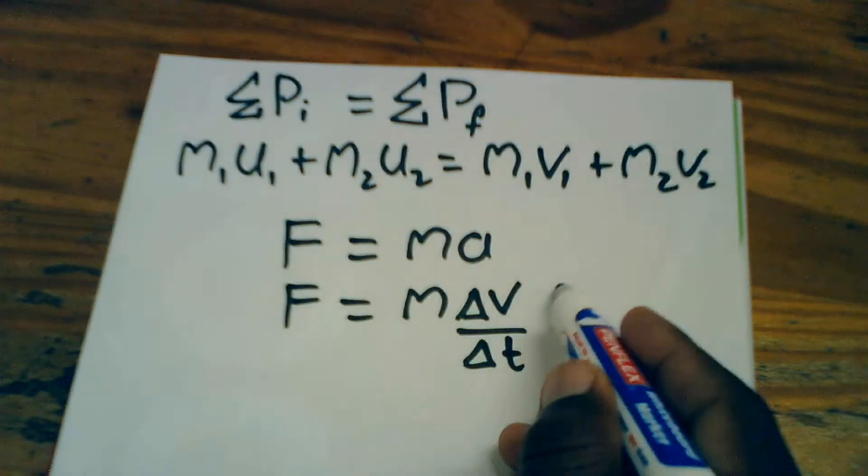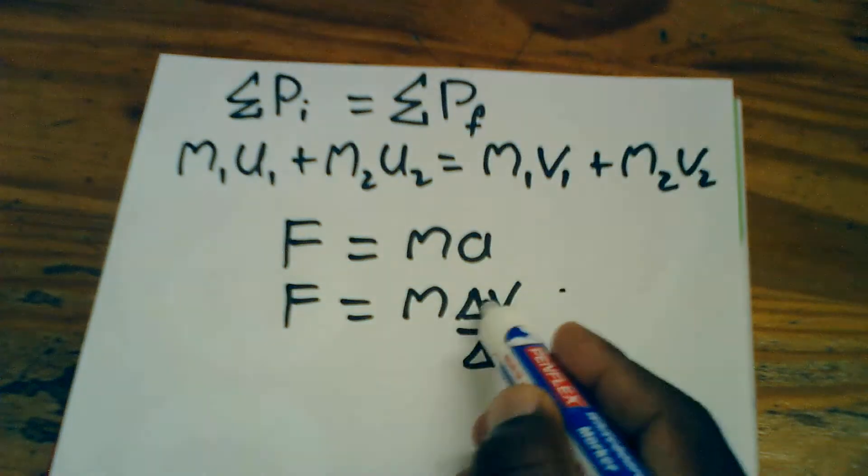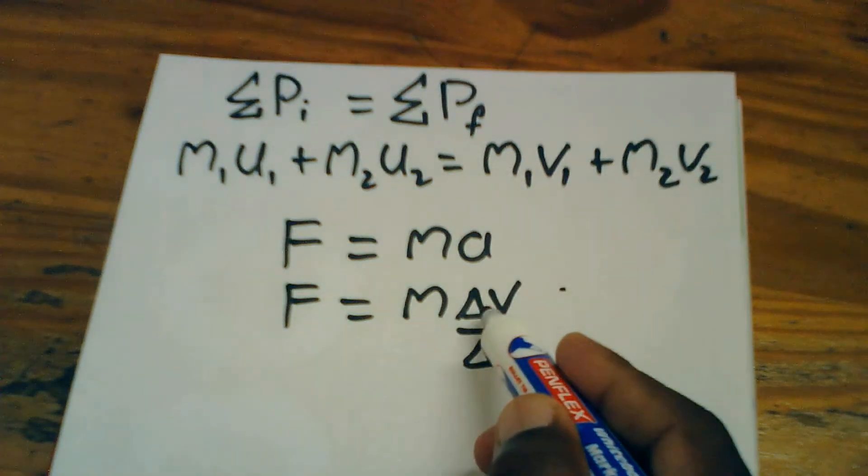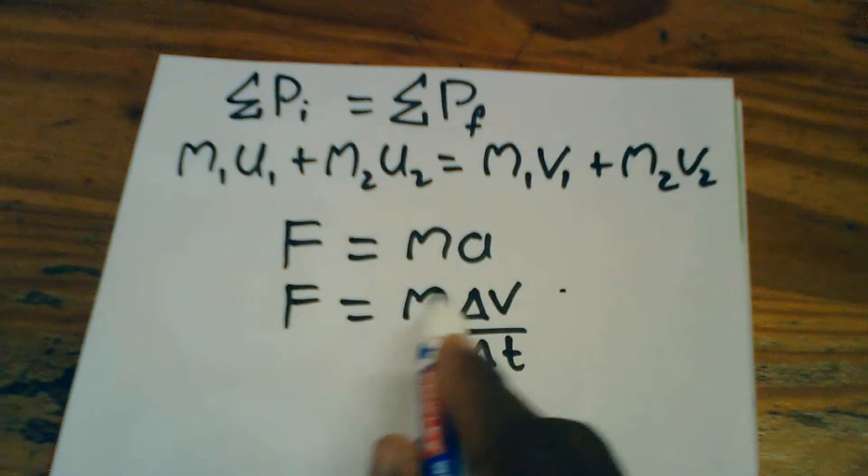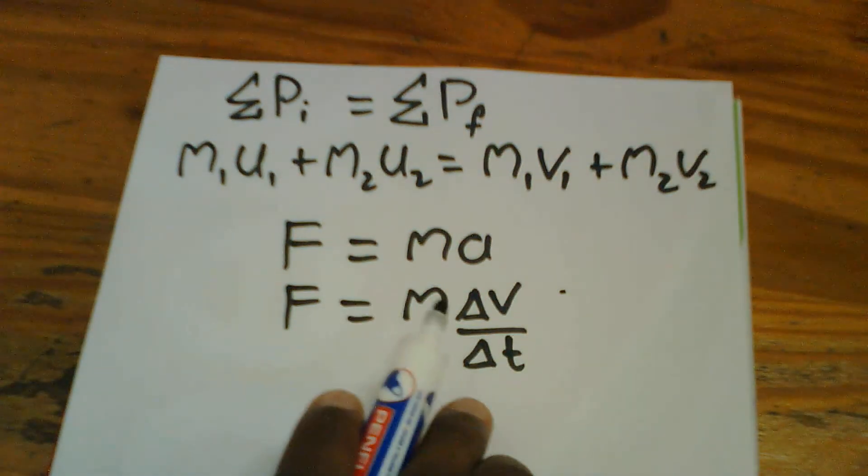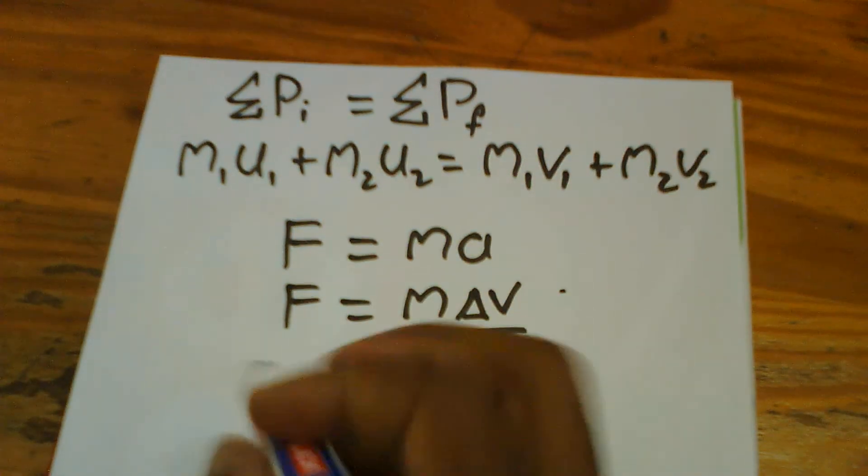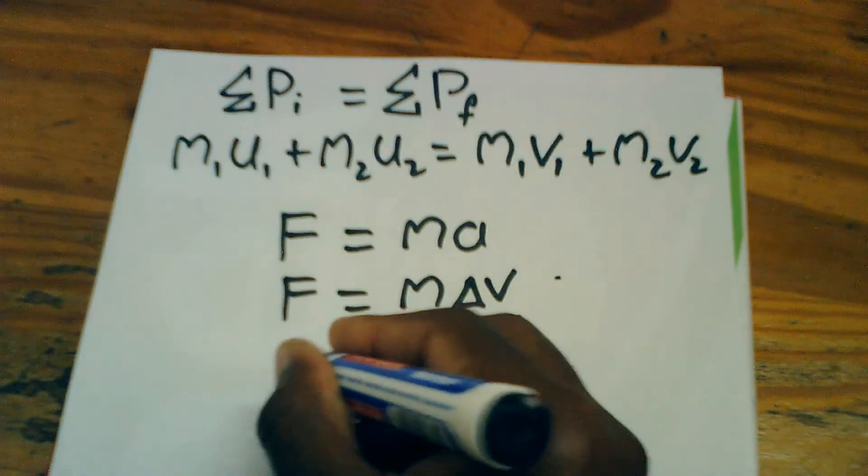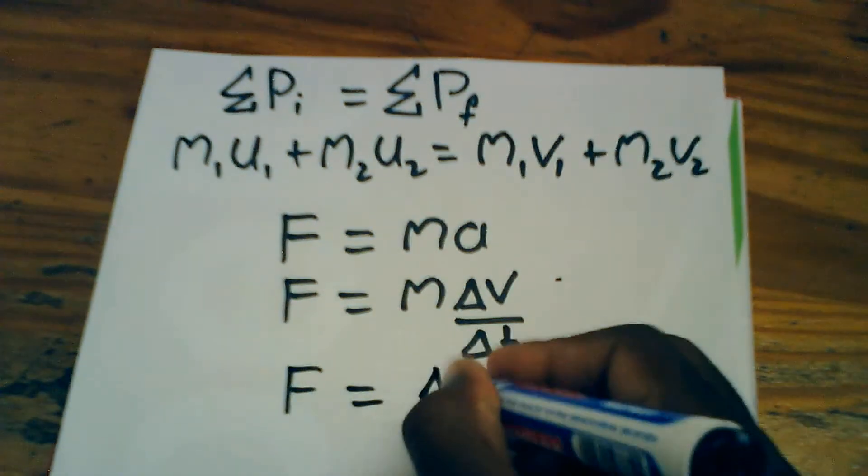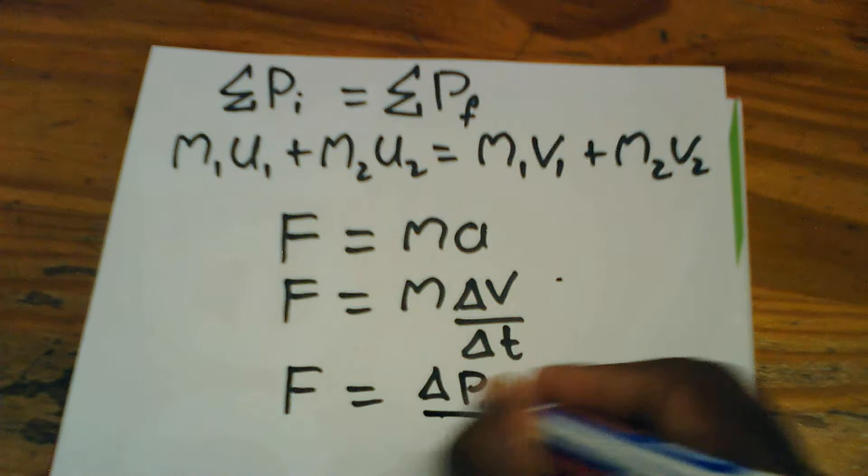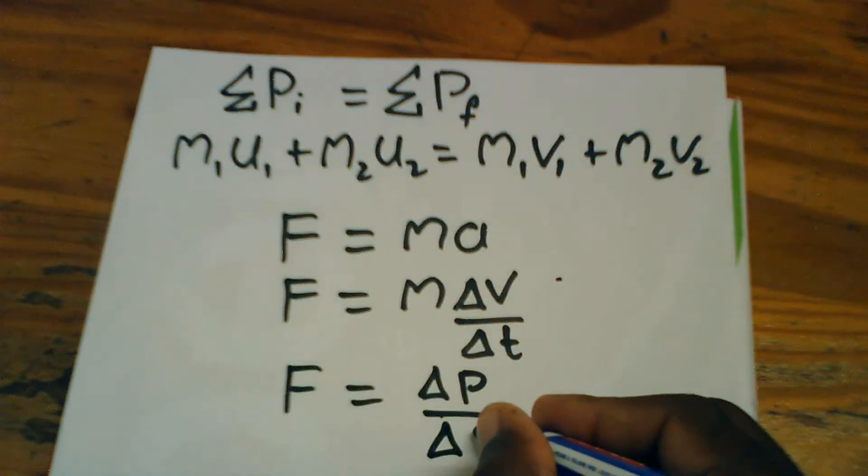Now, on top, this equation represents the momentum of an object since you know that the momentum of an object is the product of the mass and the velocity of the object. So this means that F equals to delta P all over delta T.